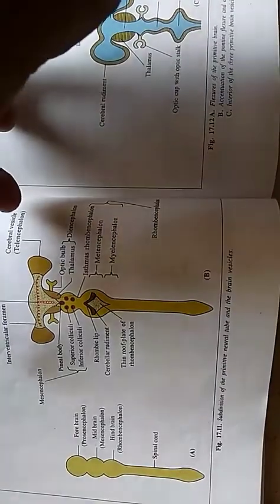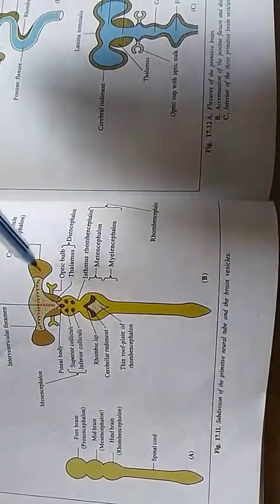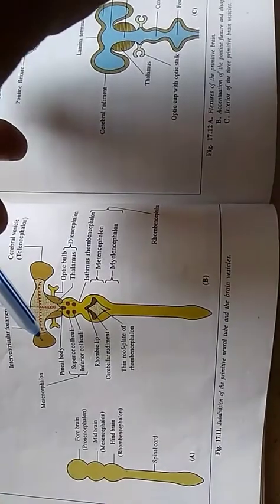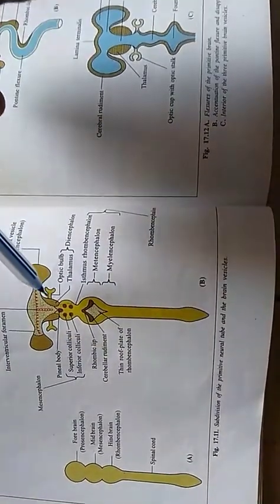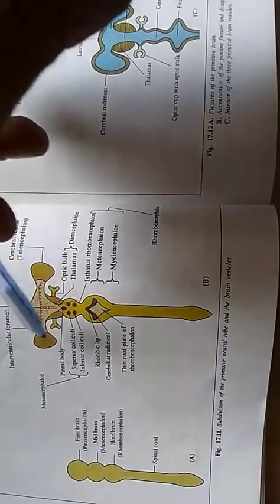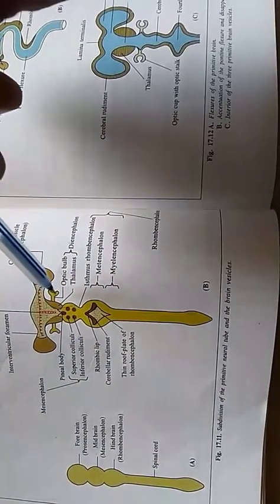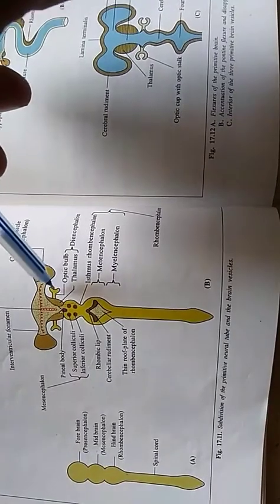Forebrain is now having two parts. The anterior part or telencephalon which includes cerebral hemispheres, and the median portion sandwiched between two cerebral hemispheres is the diencephalon which includes the optic bulbs.